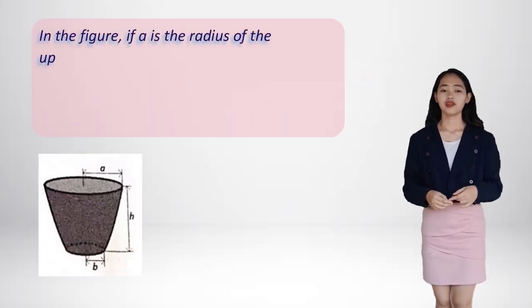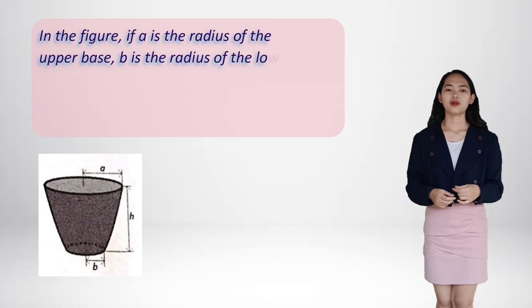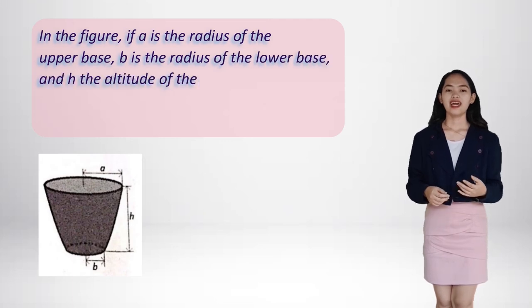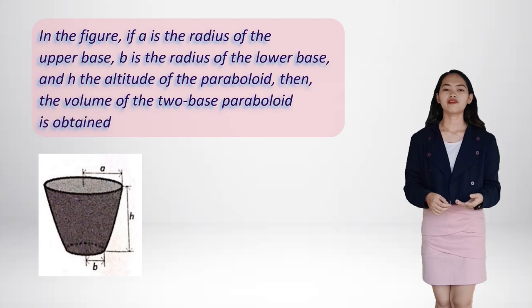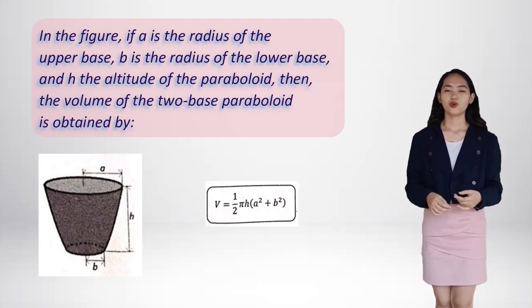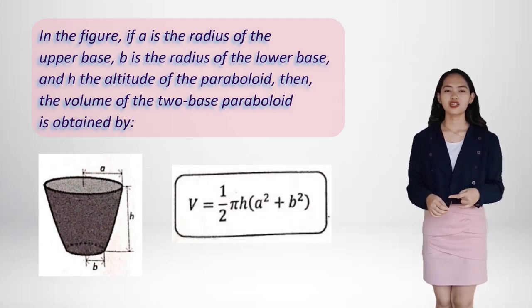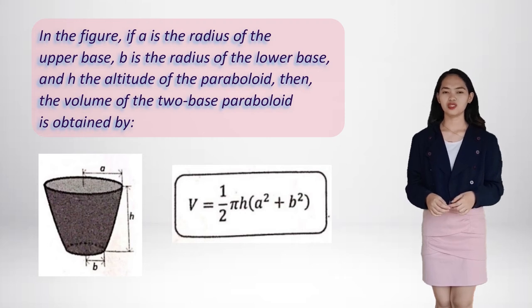In the figure, if A is the radius of the upper base, B is the radius of the lower base, and H is the altitude of the paraboloid, then the volume of the two-base paraboloid is obtained by V equals one-half pi H times A squared plus B squared.